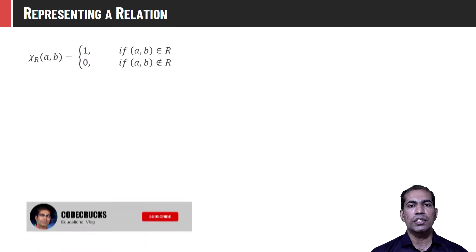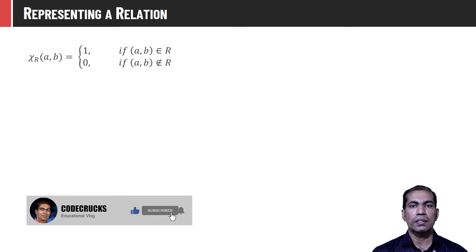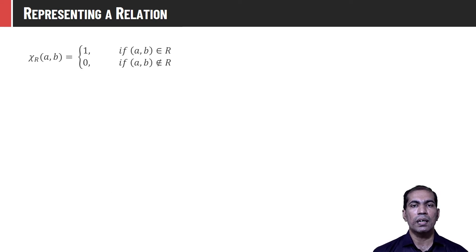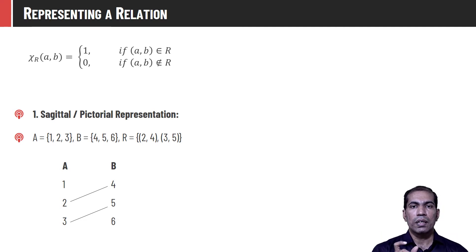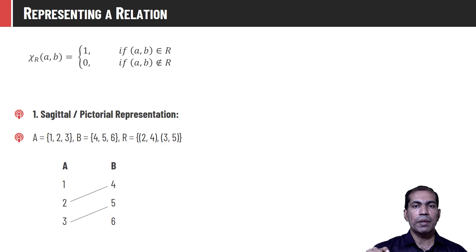Let us discuss different representations for the crisp relation. The membership value of a tuple in the relation is defined by χ_R(a, b) = 1 if the tuple is present in R, and 0 if not. One way of representing a relation is using sagittal representation or a pictorial representation. Considering the same sets and relation where R = {(2,4), (3,5)}, in sagittal representation we write all elements of A on one side and all elements of B on the other side. The tuples in R are connected: element 2 from set A is connected with element 4 in set B, and element 3 from set A is connected with element 5 in set B.